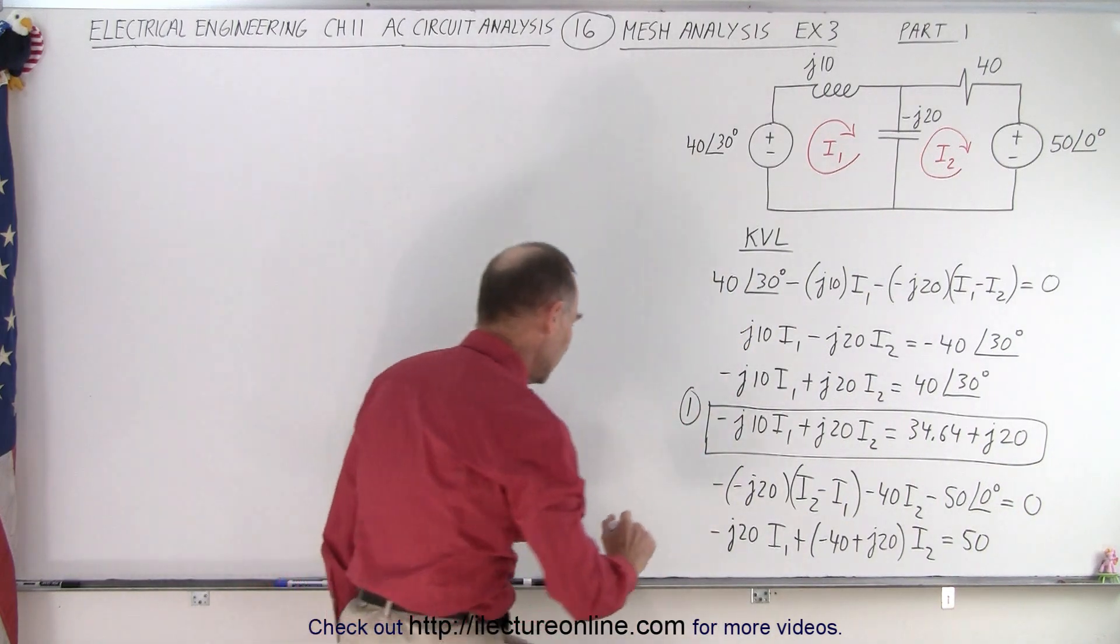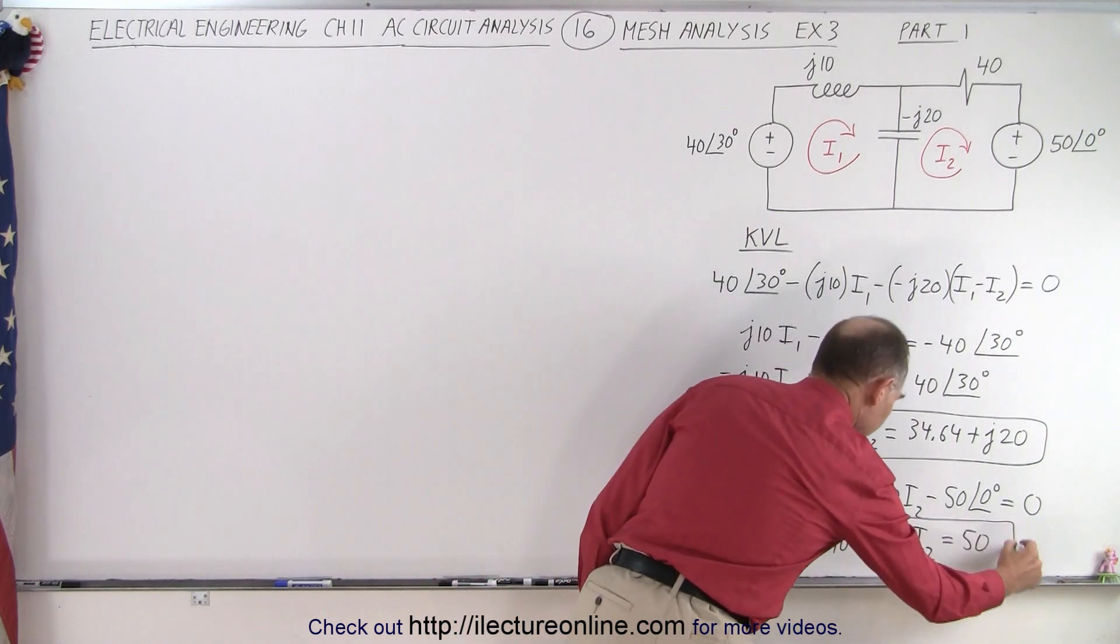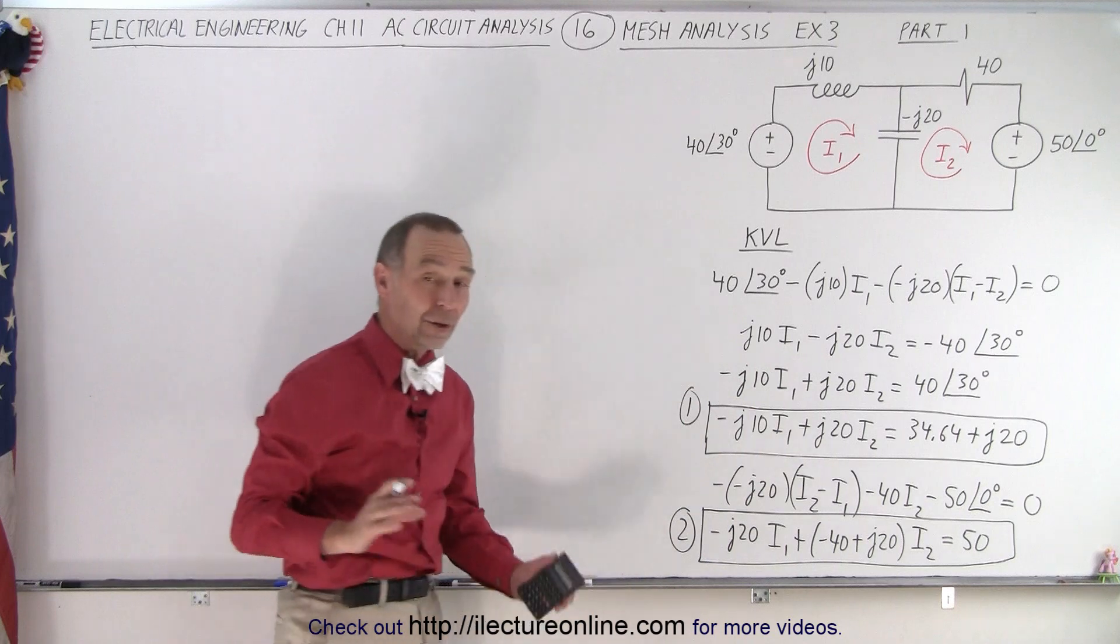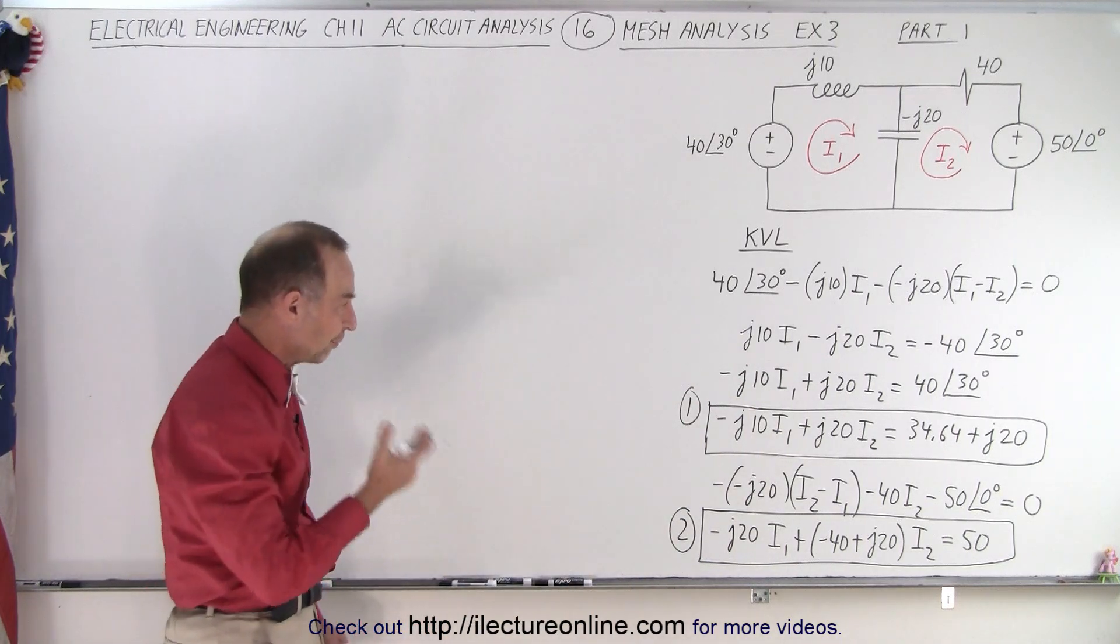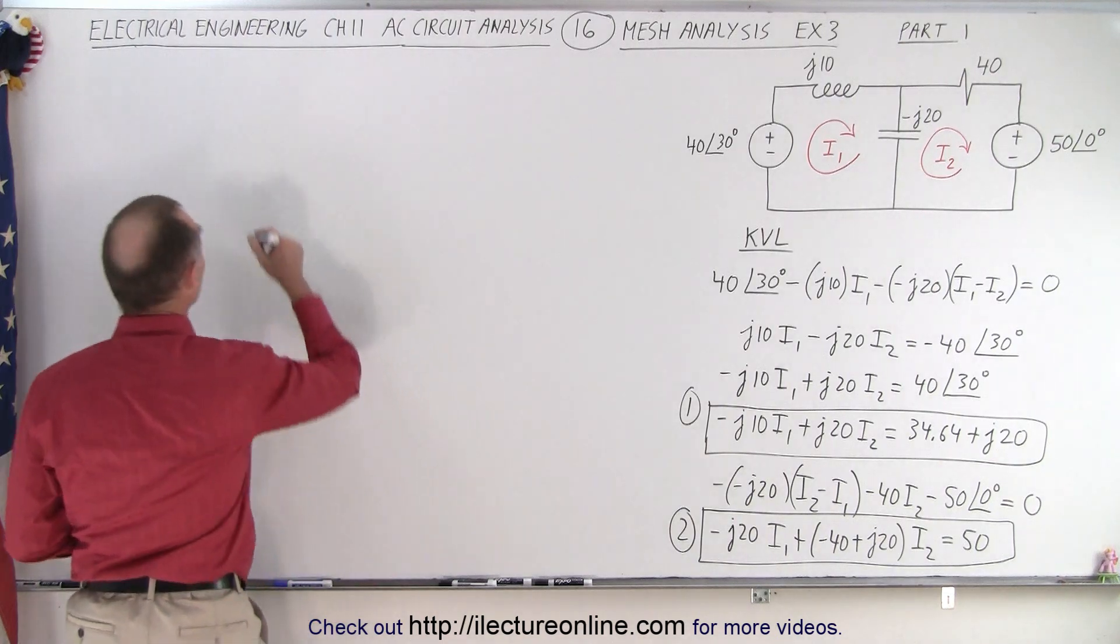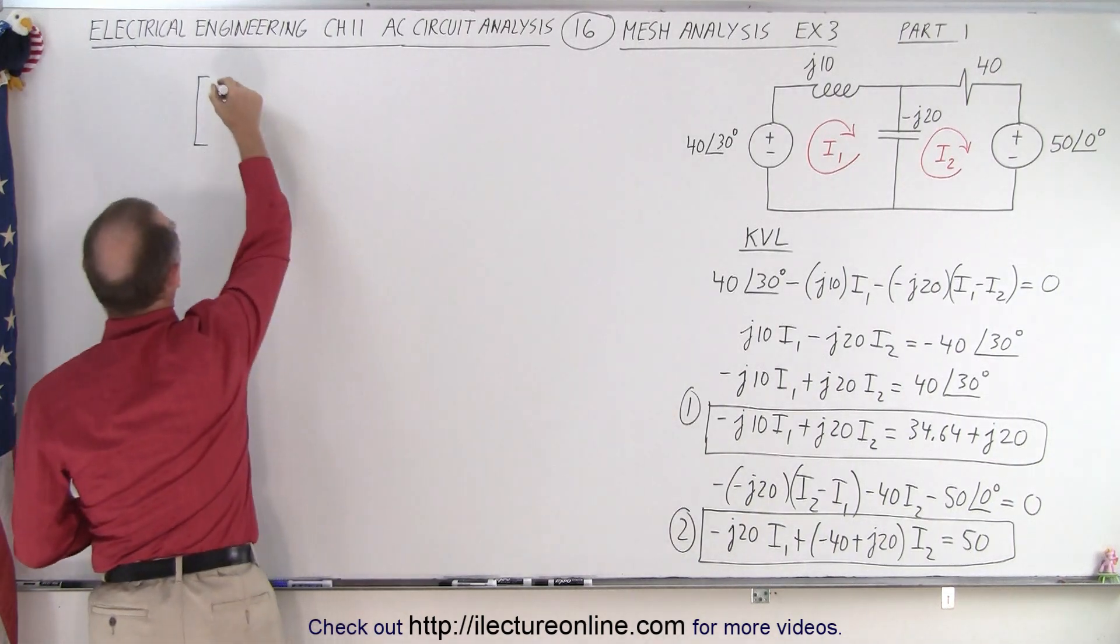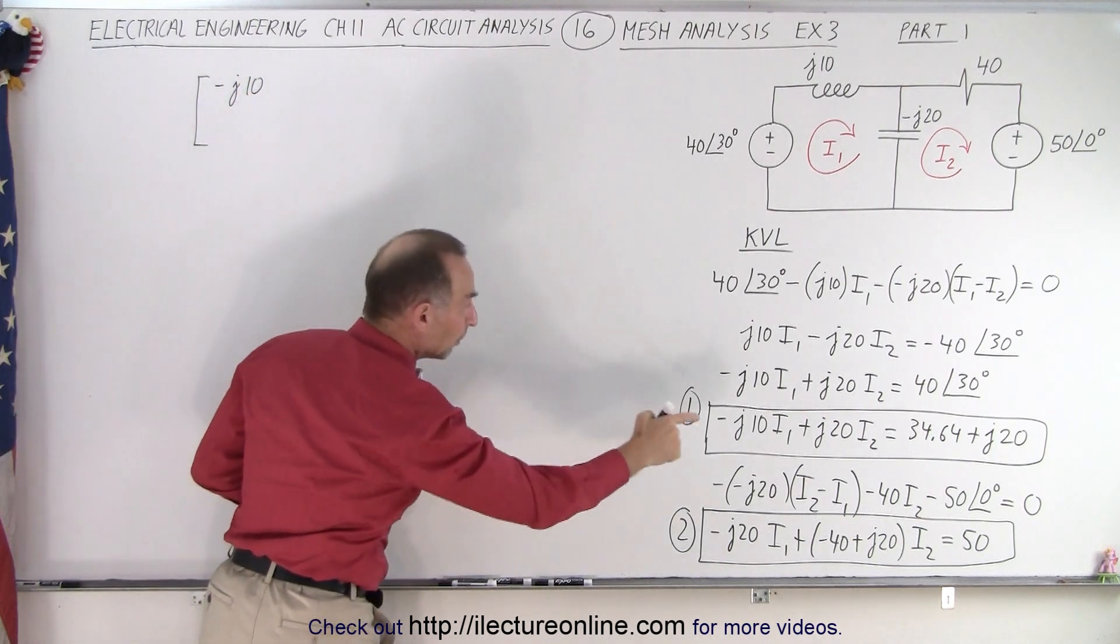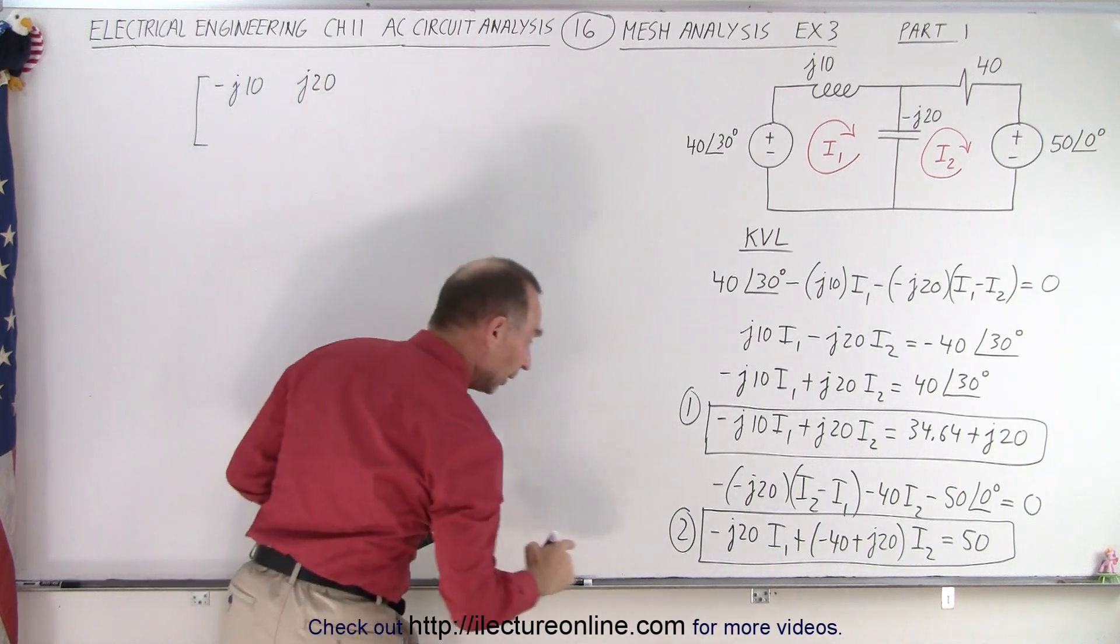And it looks like we're ready. And that's our equation number two. Now we can go ahead and set up into a matrix format to use the method of determinants to solve for the two currents. So let's do that. So here we end up with a minus J10 and a plus J20 for the first two elements.